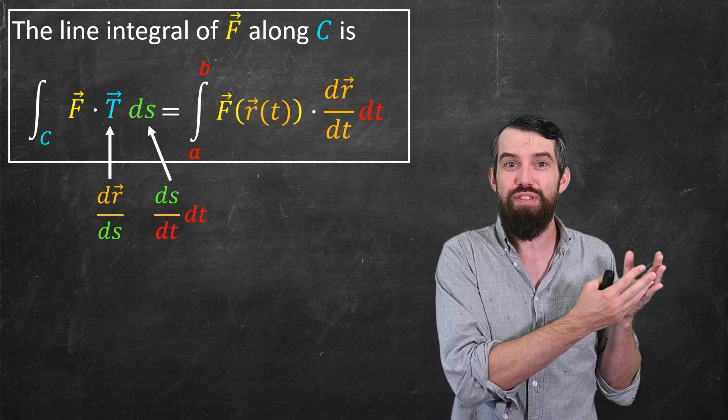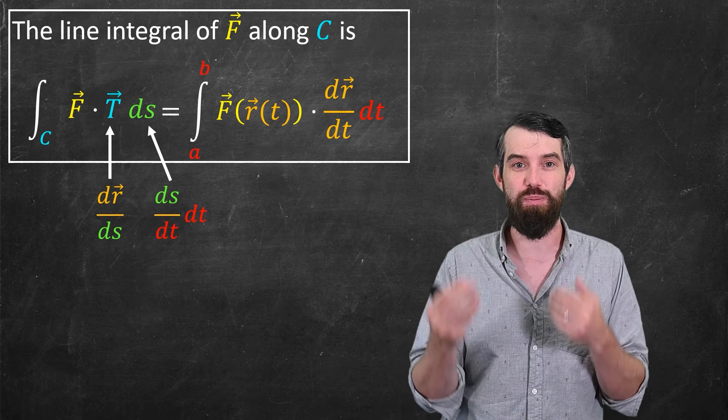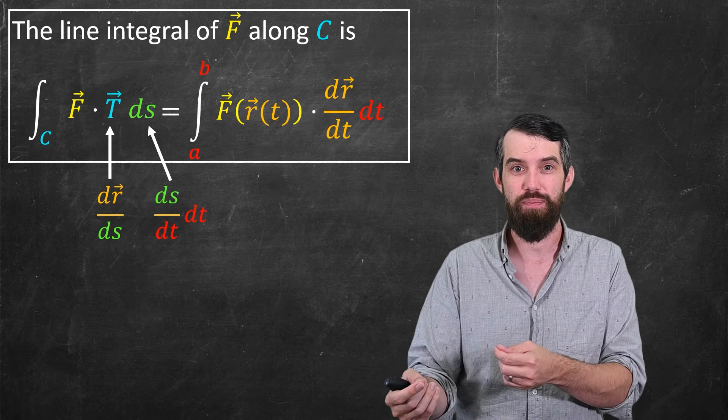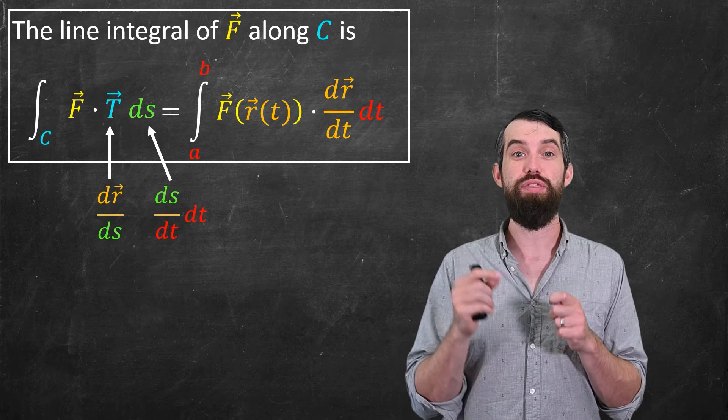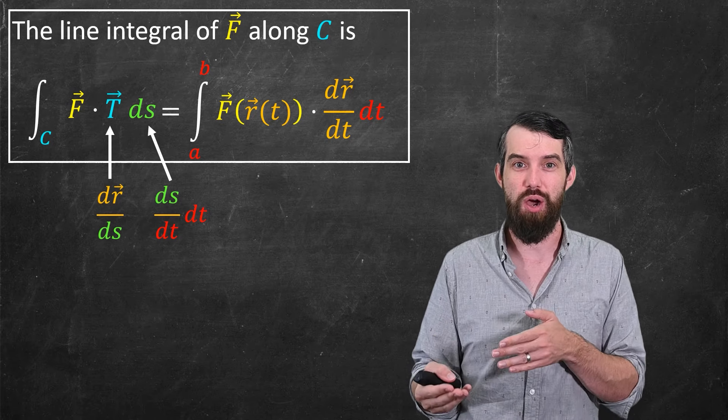So while the left side of this equation is the definition, the right side of this equation tells me how I compute it. It gives me an explicit way to compute this. And indeed, we're going to run through a concrete example computing a vector field along a curve in the next video.